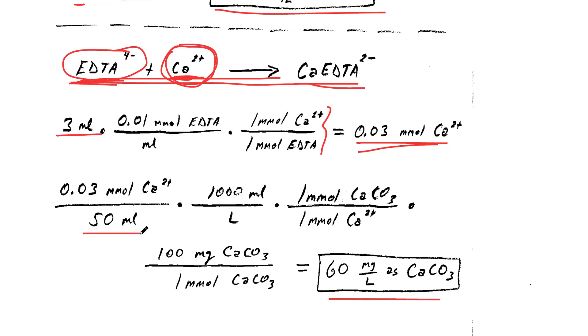When we divide that by the volume, 50 milliliters, and we do a unit conversion again, then we can multiply times this 1 millimole of calcium carbonate per millimole of calcium. This is essentially the definition of these units when we say as calcium carbonate.